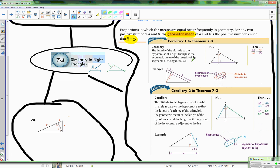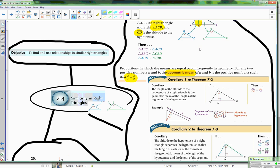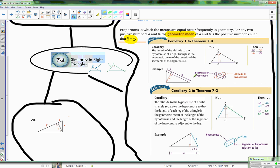So corollary 1 to theorem 7-3 is: the length of the altitude to the hypotenuse of the right triangle is the geometric mean of the lengths of the segments of the hypotenuse.